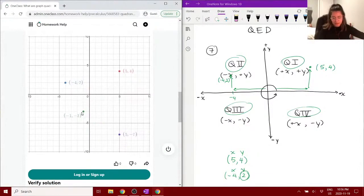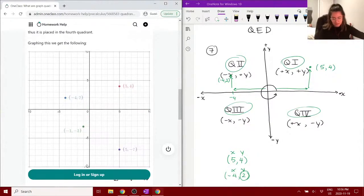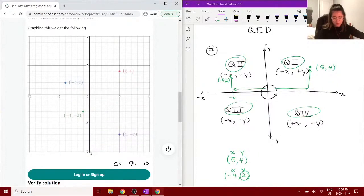And down negative 3. These axes aren't labeled, but it's the same where this one is y and this horizontal one is x.